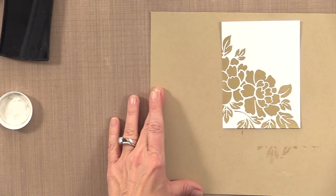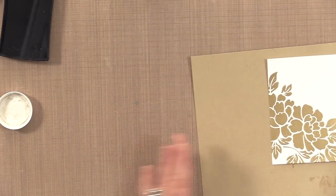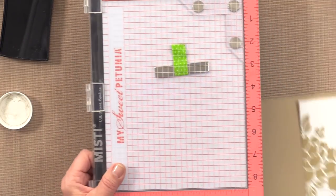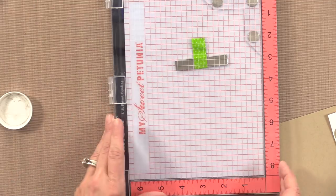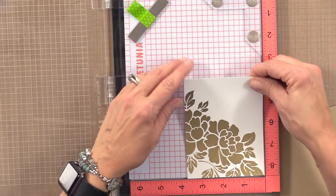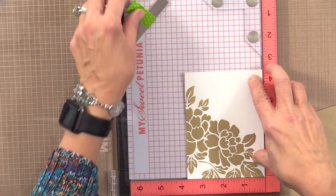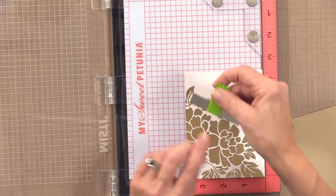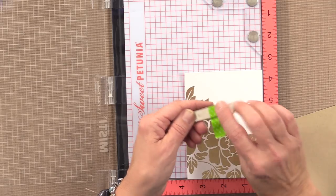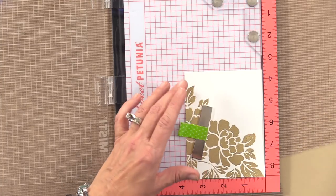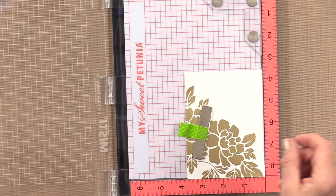Okay, now I'm going to grab my MISTI because I want to add my greeting. So I have my MISTI here and I want to heat emboss my greeting as well. I'm going to put my piece of cardstock into the corner of my MISTI and I'm going to use my magnet. If you haven't tried the new MISTI bar magnet by My Sweet Petunia, it's a really nice strong magnet. It's a good one to try.